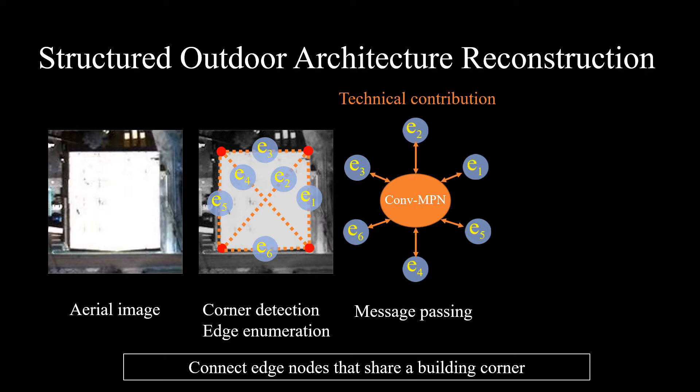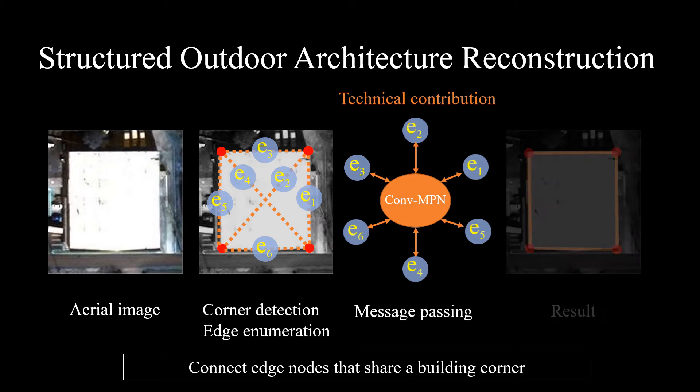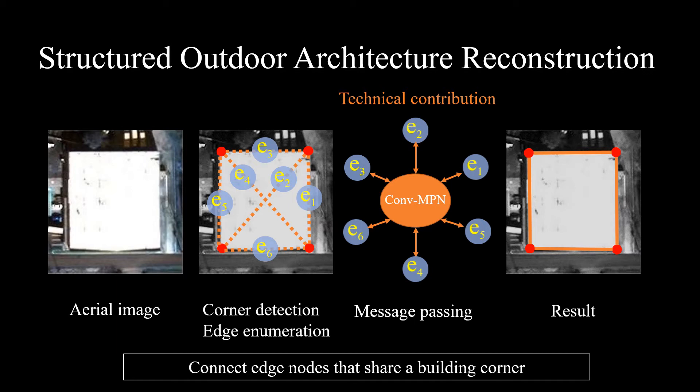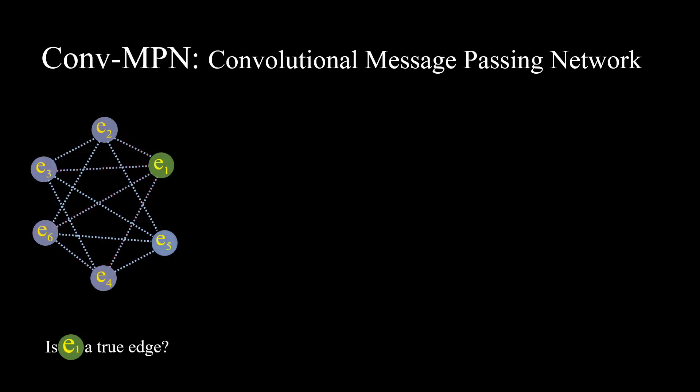Our ConvNPN network classifies each building edge candidate to be true or false. Take node E1 as an example to explain how ConvNPN works.